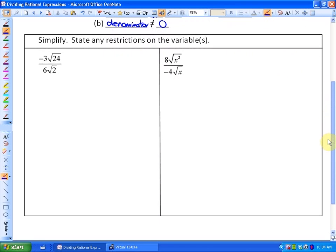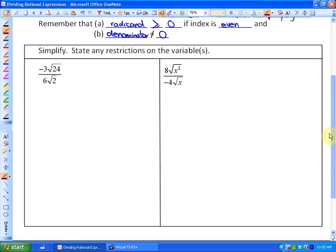So let's look at these two examples. It says simplify and state any restrictions on the variable. In this first one, there's absolutely no variables, so there are no restrictions to talk about. There are two ways you can simplify: you can simplify the numerator and denominator first and then divide, or you can divide and then simplify.